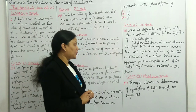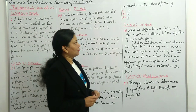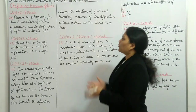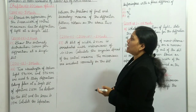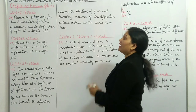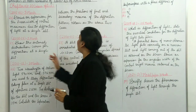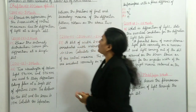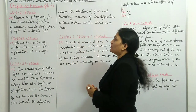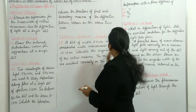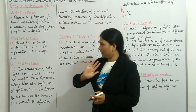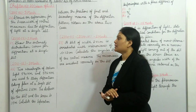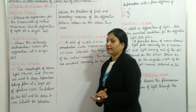Question number nineteen, which appeared in model paper 2021: briefly discuss the phenomenon of diffraction of light through a single slit. Question number twenty, from 2015-16 for three marks: derive an expression for the linear width of the central maximum due to diffraction of light at a single slit. Question number twenty-one, from 2012-13 for one mark: draw the intensity distribution curve for diffraction at a single slit.